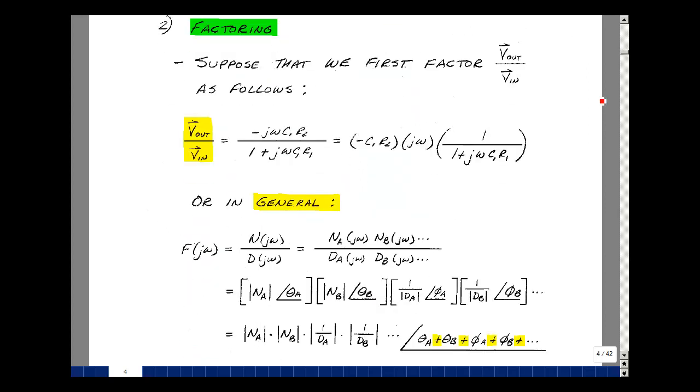What if we factor the transfer function on the previous page into a product of terms? Let's take the term minus C1 R2, multiply that by j omega, and then multiply that by the reciprocal of the denominator: 1 over 1 plus j omega C1 R1. So we've got a product of terms.